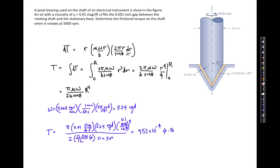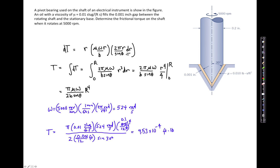To recap the key points: first, shear stress is related to the velocity gradient by tau = mu·du/dy, evaluated at the surface. Second, the surface velocity varies with position, so shear stress varies too. Third, because both the stress and the moment arm vary, you must set up and evaluate an integral. Practicing these integral setups is the main goal of this example and the related homework problem.